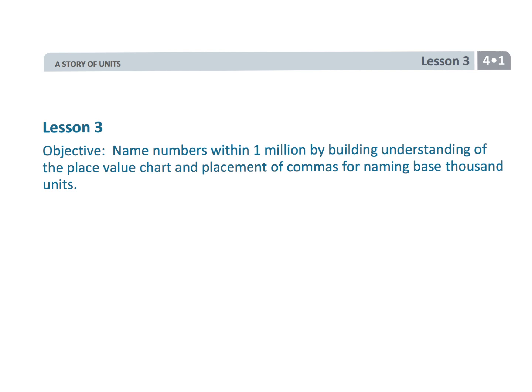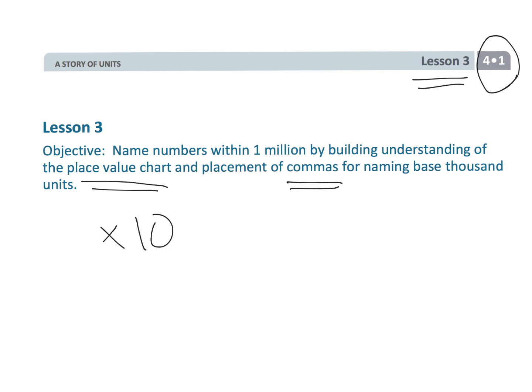That wraps up fourth grade module one, lesson three, where we're using the place value chart and putting in our commas where they're supposed to go. Really, we're looking for that shortcut — the pattern for what happens when you multiply a number by ten.